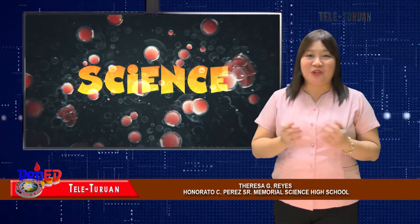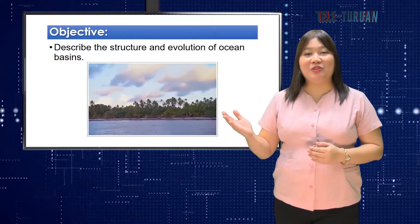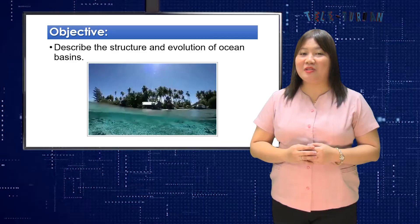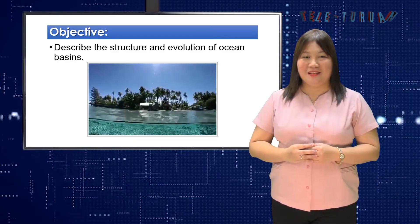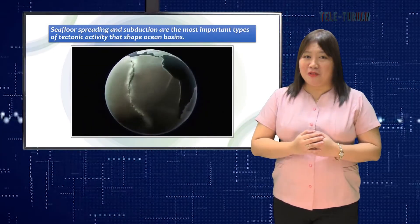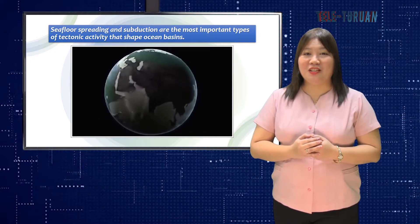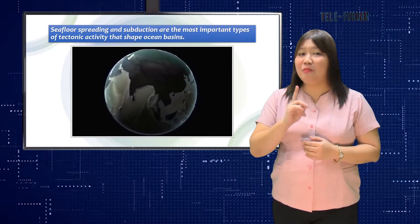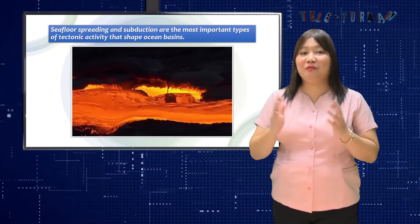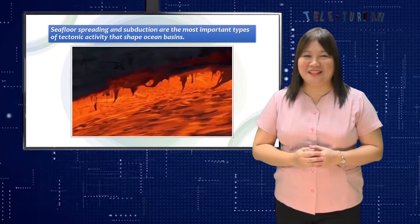Let us study and learn through this objective: describe the structure and evolution of ocean basins. If you recall our previous topic, you have learned that seafloor spreading and subduction are the most important types of tectonic activities that shape the Earth and also the ocean basins.